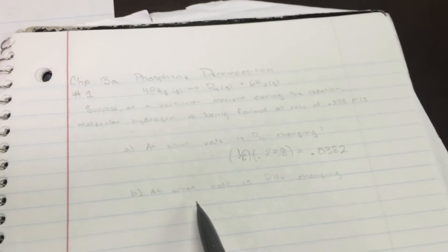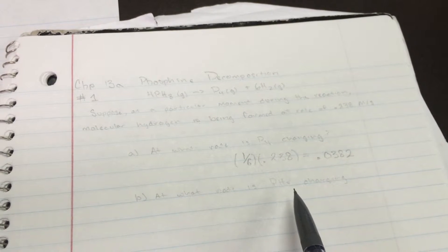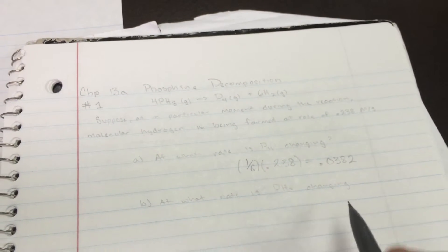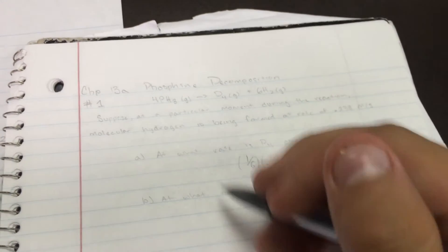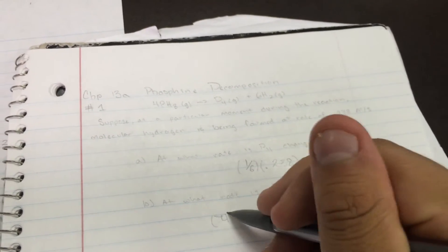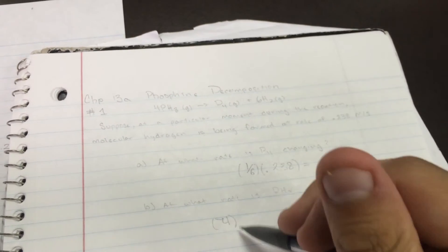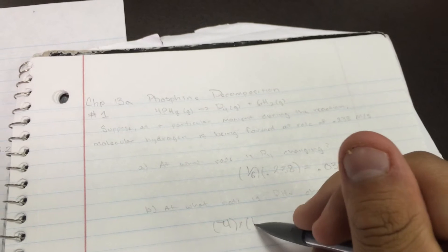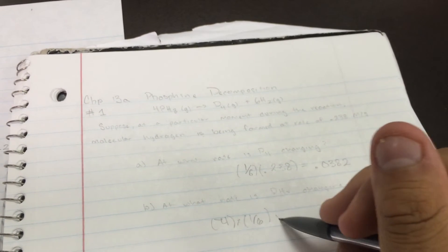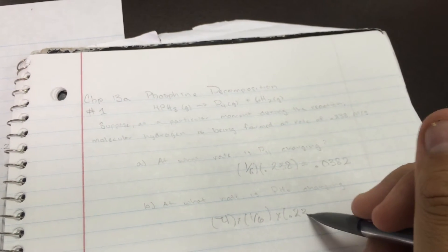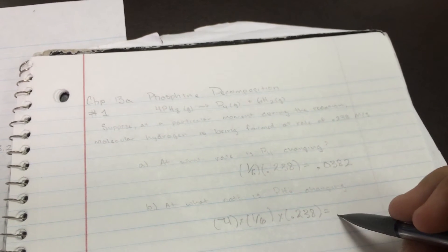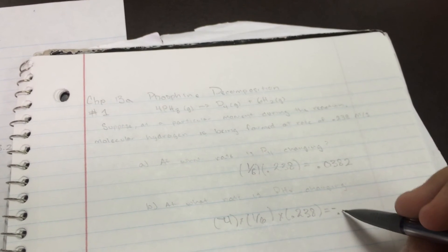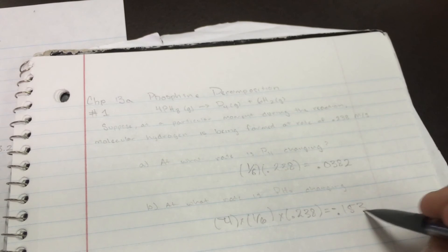Now, at what rate is PH3 changing? You'll use negative 4, because it's on the other side, times 1 over 6, times 0.238. And that will give you an answer of negative 0.153.